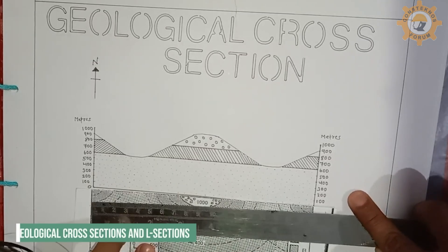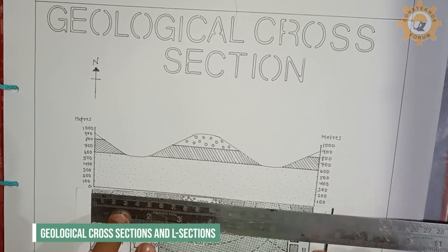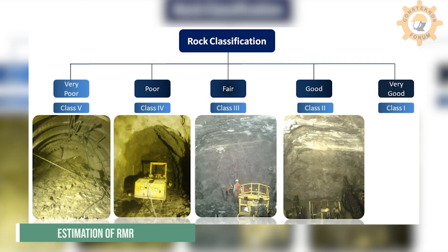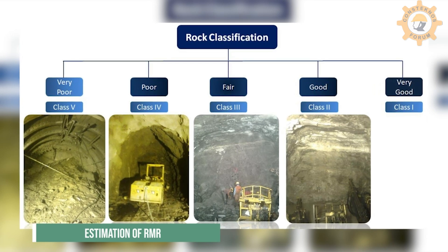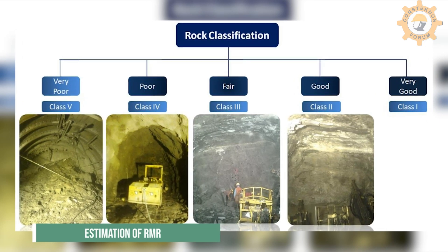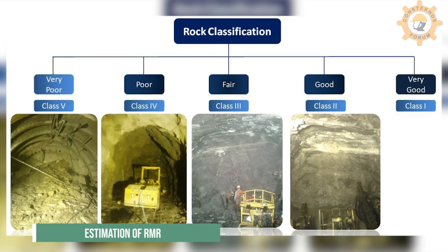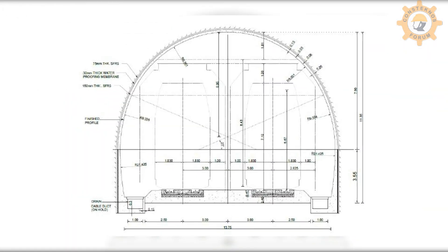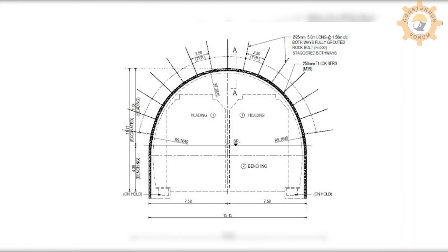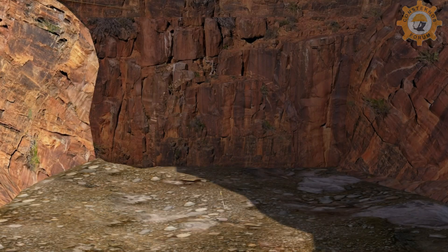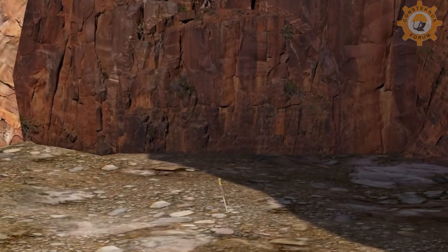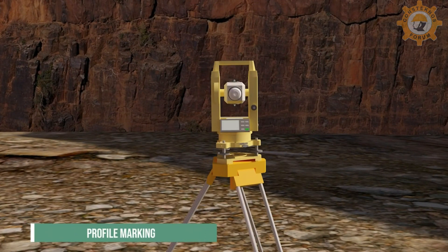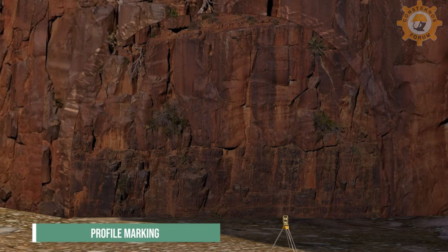Geological cross sections and longitudinal sections were prepared, along with estimation of RMR (Rock Mass Rating) for design of rock support for individual rock classes. Design of the tunnel considered all engineering factors. The tunnel construction cycle begins with profile marking of rock by a tunnel profiler for the initial 20 meters.